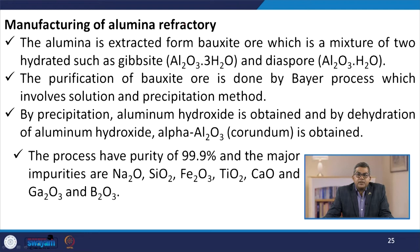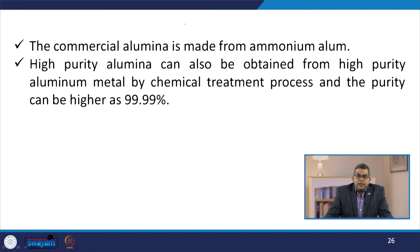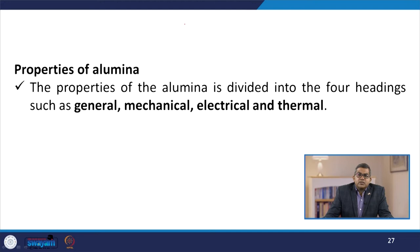The Bayer process achieves a purity of 99.9%, with major impurities being Na2O, SiO2, Fe2O3, TiO2, CaO, Ga2O3, and B2O3. Commercial alumina is made from aluminium alum. High-purity alumina can also be obtained from high-purity aluminium metal by chemical treatment, with purity as high as 99.99%. The properties of alumina are divided into four headings: general, mechanical, electrical, and thermal.